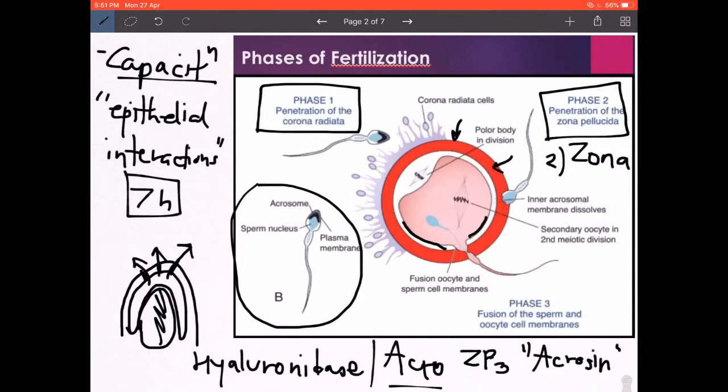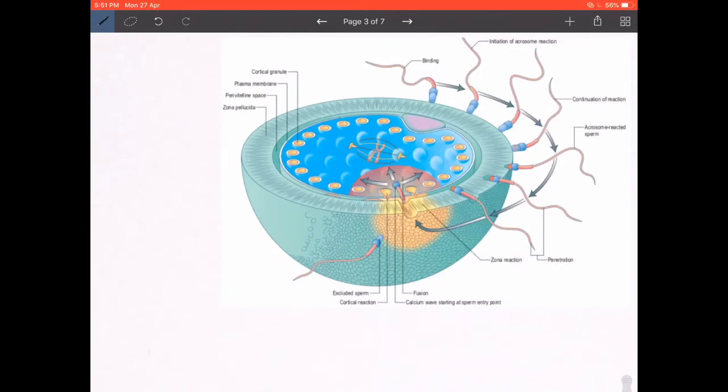If you observe this slide carefully, you can see that the zona pellucida has been dissolved at this point. The other sperm is not being able to contact; it is basically being rejected or excluded. This is happening because there is a change in the nature of the zona pellucida due to the zona reaction.